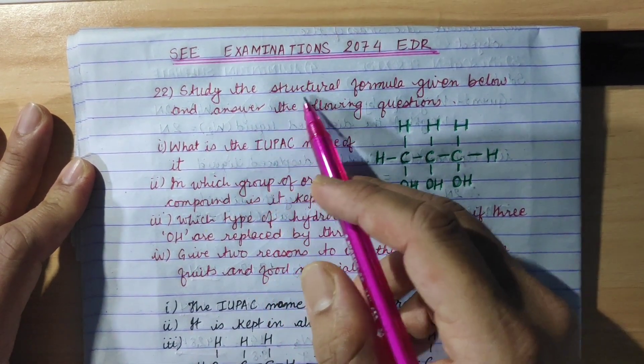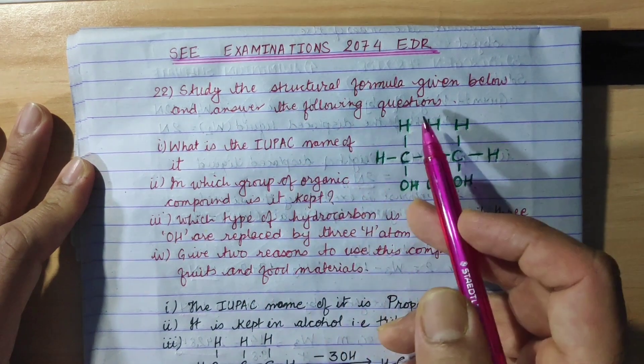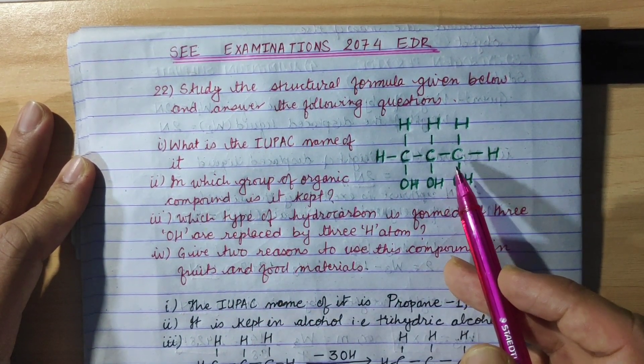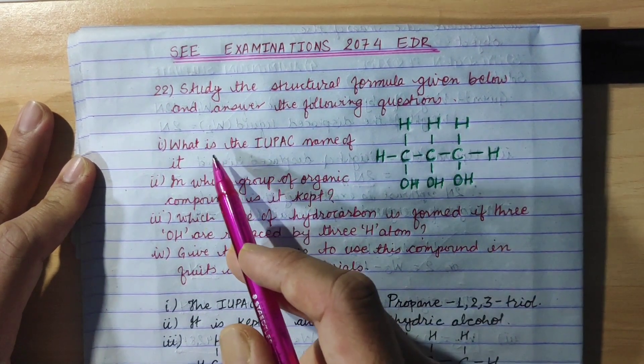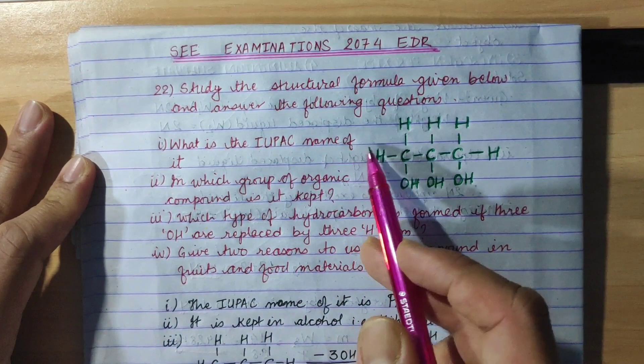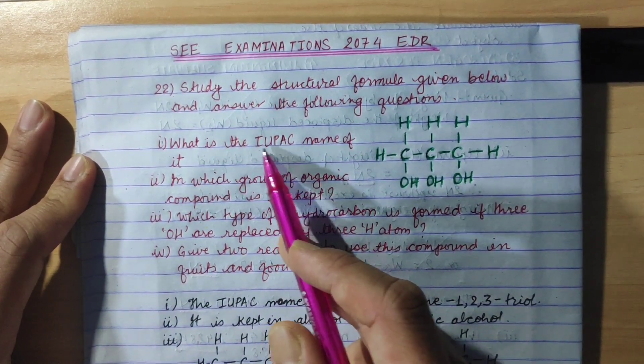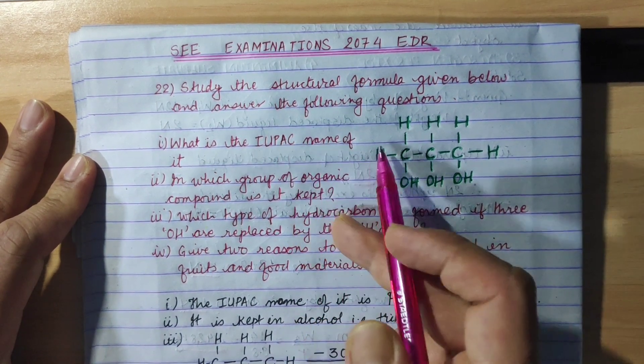Study the structural formula given below and answer the following questions. What is the IUPAC name of it? IUPAC is called International Union of Pure and Applied Chemistry name.